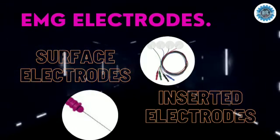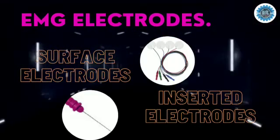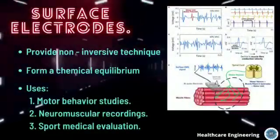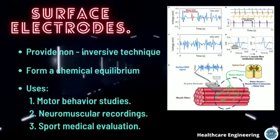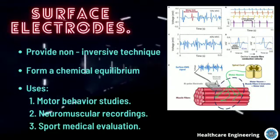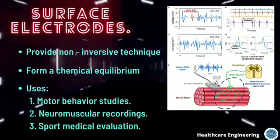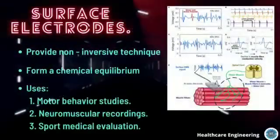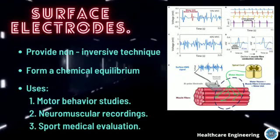Mainly, there are two types of electrodes: surface electrodes and inserted electrodes. Surface electrodes provide a non-invasive technique for measurement and detection of the EMG signal. The theory behind these electrodes is that they form a chemical equilibrium between the detecting surface and the skin of the body through electrolytic conduction, so that current can flow into the electrode.